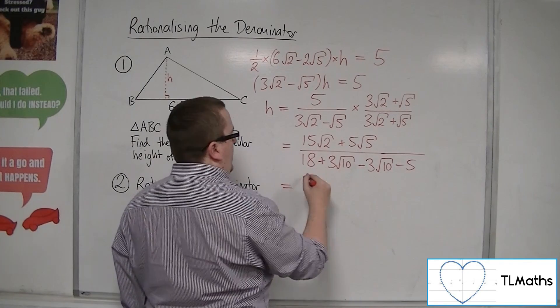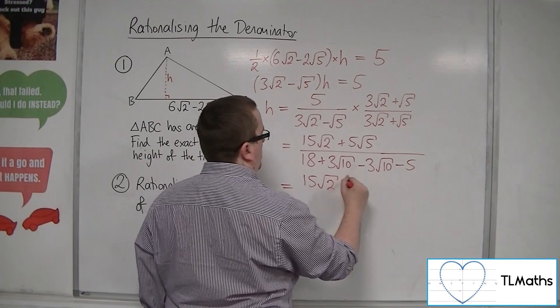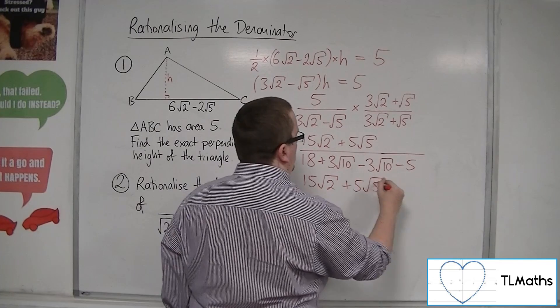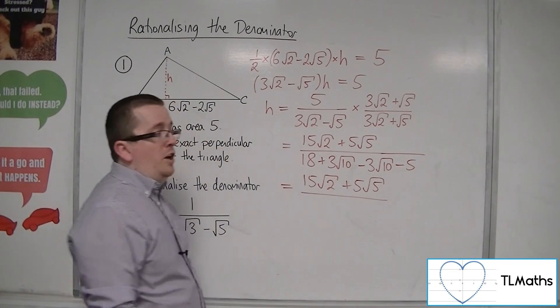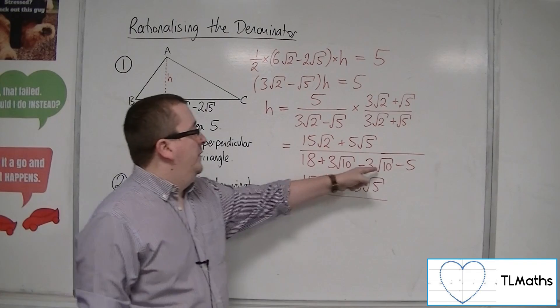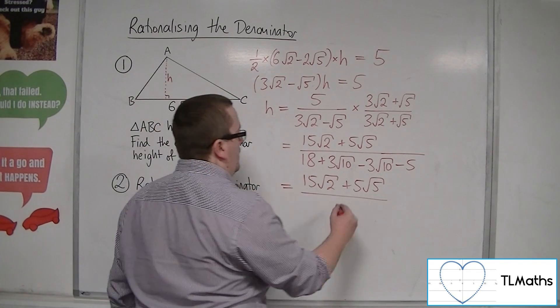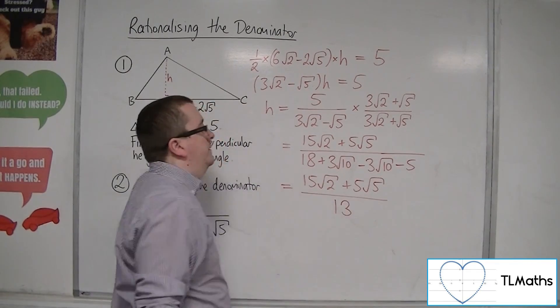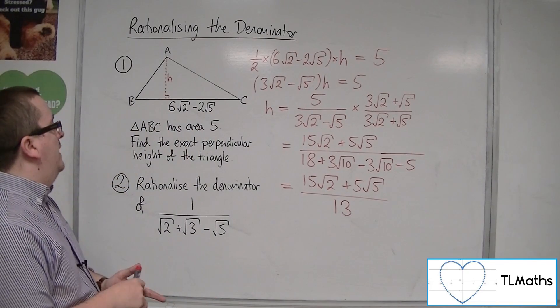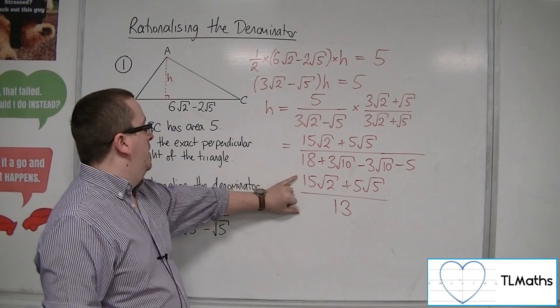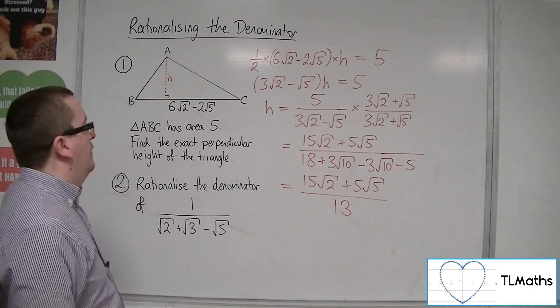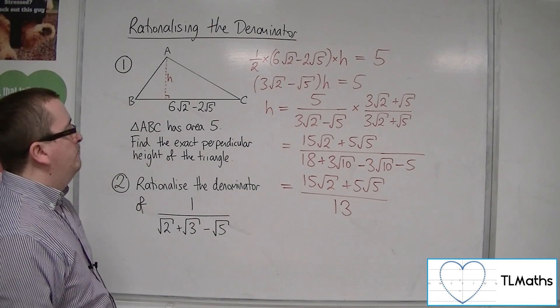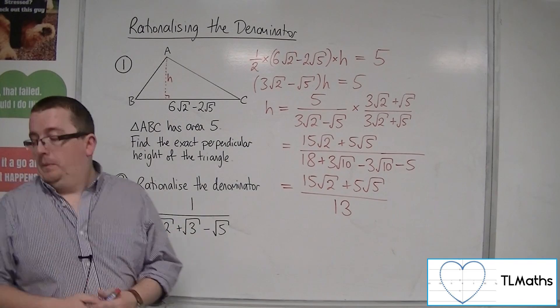So we've got the 15 root 2 plus 5 root 5 in the numerator. And in the denominator, the roots cancel and I'm left with 18 take away 5, so 13. So that is the exact perpendicular height of the triangle. So that's the first one.